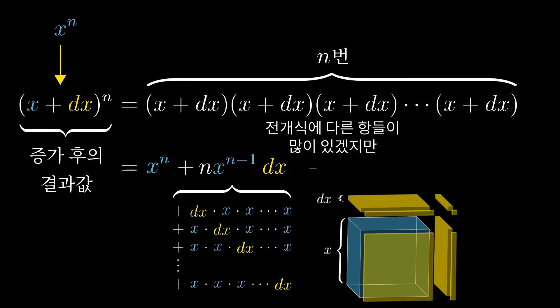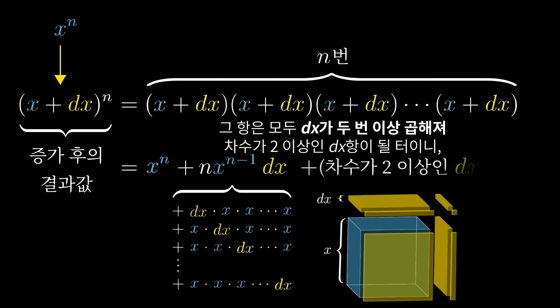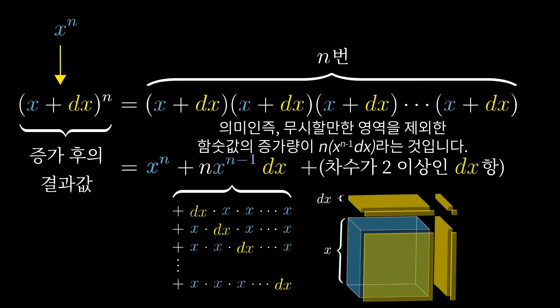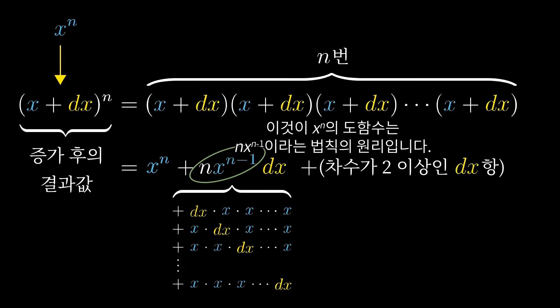There will be many other terms in this expansion, but all of them are just going to be some multiple of dx squared, so we can safely ignore them. And what that means is that all but a negligible portion of the increase in the output comes from n copies of this x to the n-1 times dx. That's what it means for the derivative of x to the n to be n times x to the n-1.